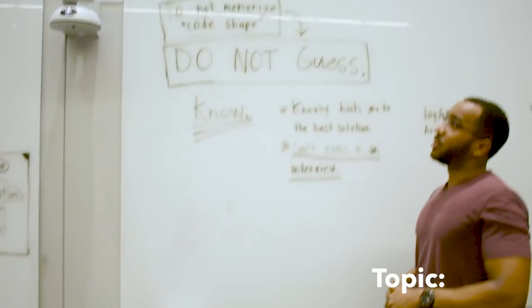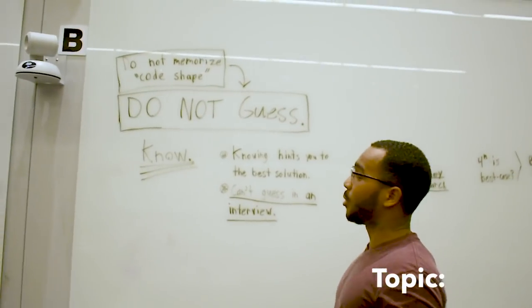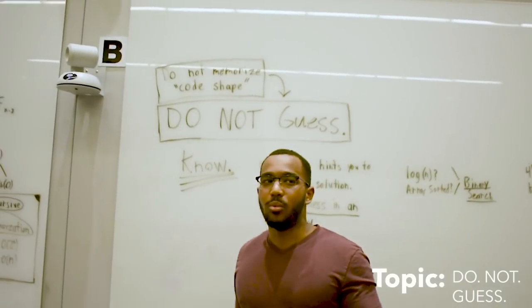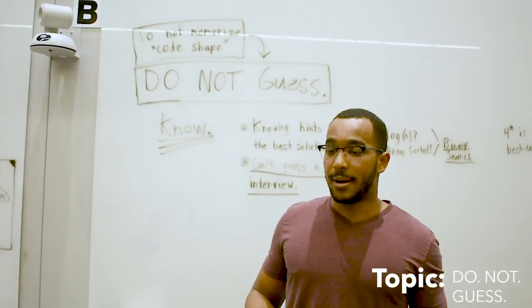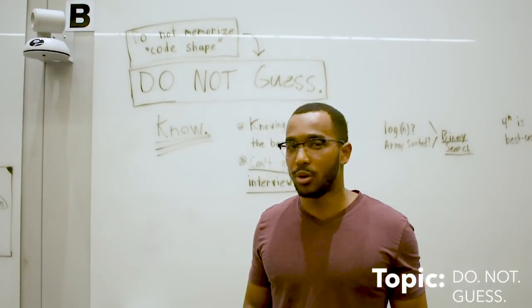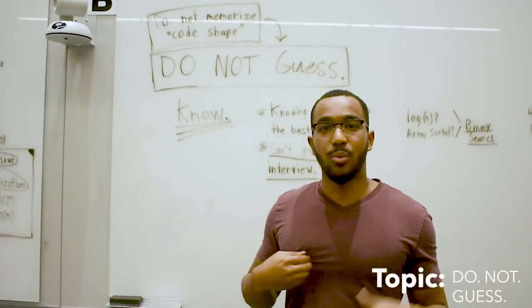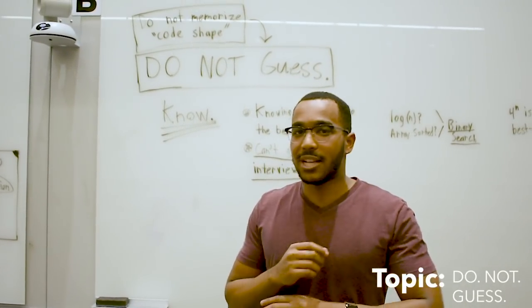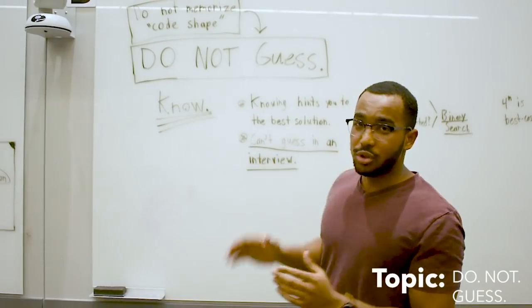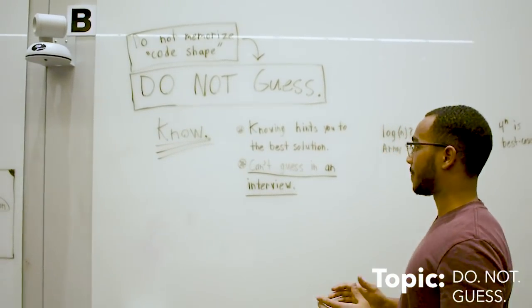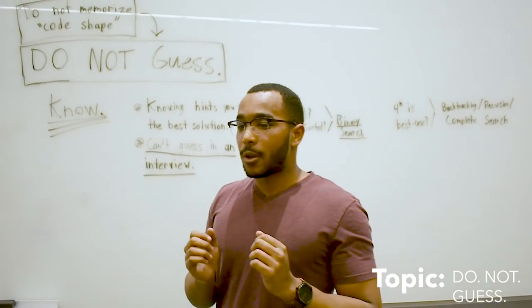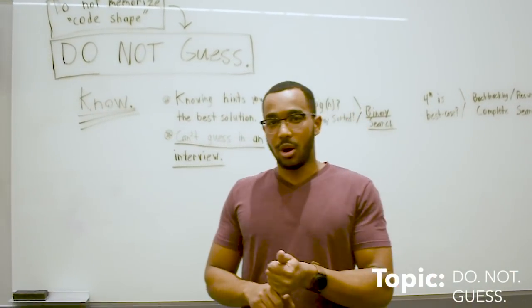This is a very huge point. When I first learned big O notation, I would try to memorize the shape of code. I'd see two for loops and I'd say n squared. I'd see one for loop, I'd say n. But that's not what you should do.